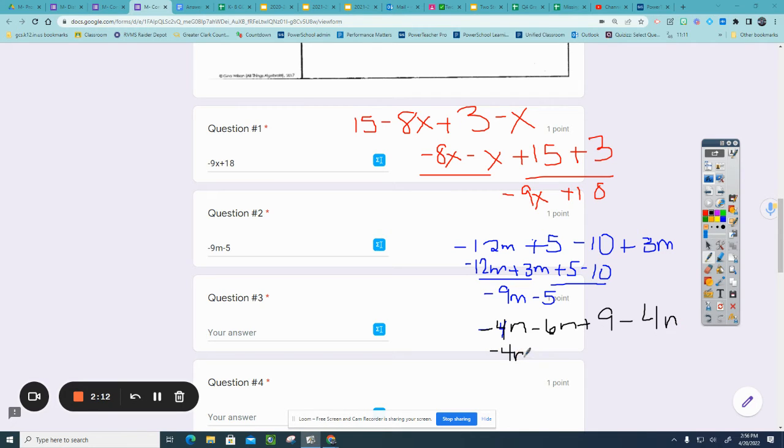This will all equal negative 14n plus 9. You will type that with no spaces, negative 14n plus 9.